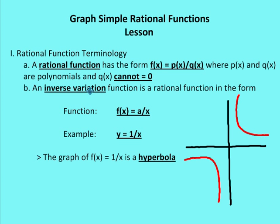Let's start with a single before we get into doubles, triples, and home runs. We're going to start with an inverse variation function, which is a rational function in the form f of x is equal to a over x. I'm going to give you the example y is equal to one over x. The graph of y is equal to one over x is a hyperbola, and the hyperbola looks something like what I've drawn here in red.